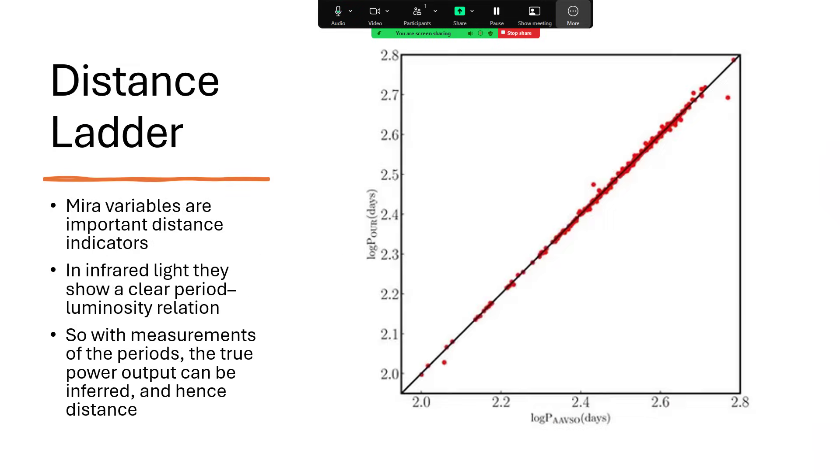But we can use these Mira variables as steps on the cosmic distance ladder. This lovely straight line plot tells the story that we can correlate the infrared light output. We have to just look to see how much heat is coming from the star. And we get a period versus luminosity correlation, actually a very good one. And so if we know the period, then we can infer the true power output.